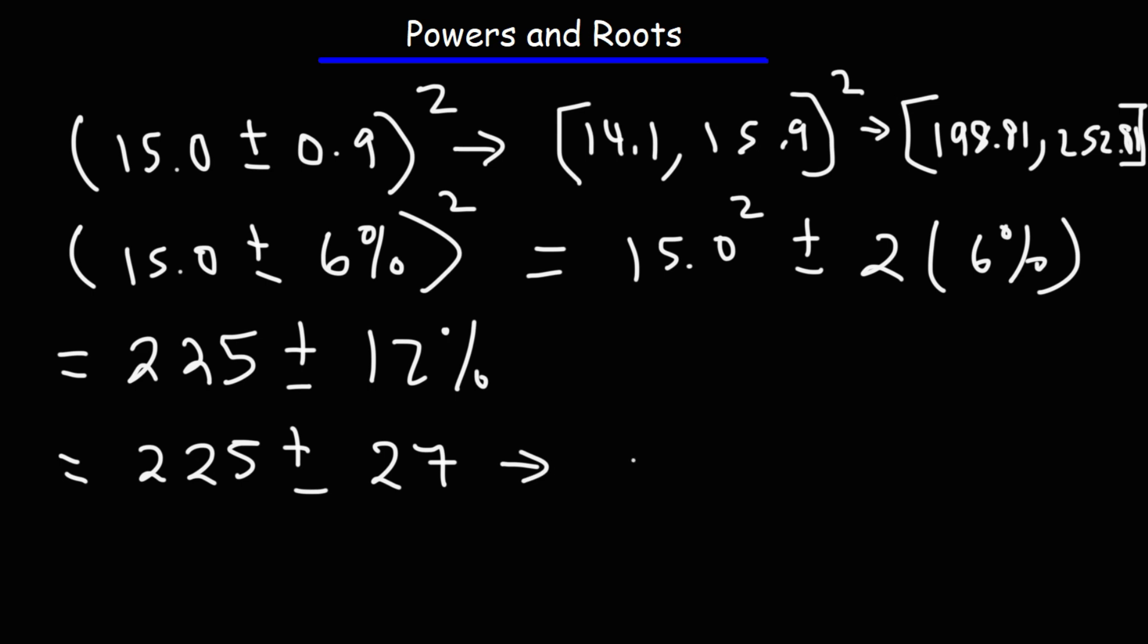Now let's look at the range for the final result. So 225 minus 27 is 198, and 225 plus 27 is 252. As we can see, these two ranges are pretty close to each other. This number is inside the range, but this one is just outside of it. But we can fix that when we round our answer.